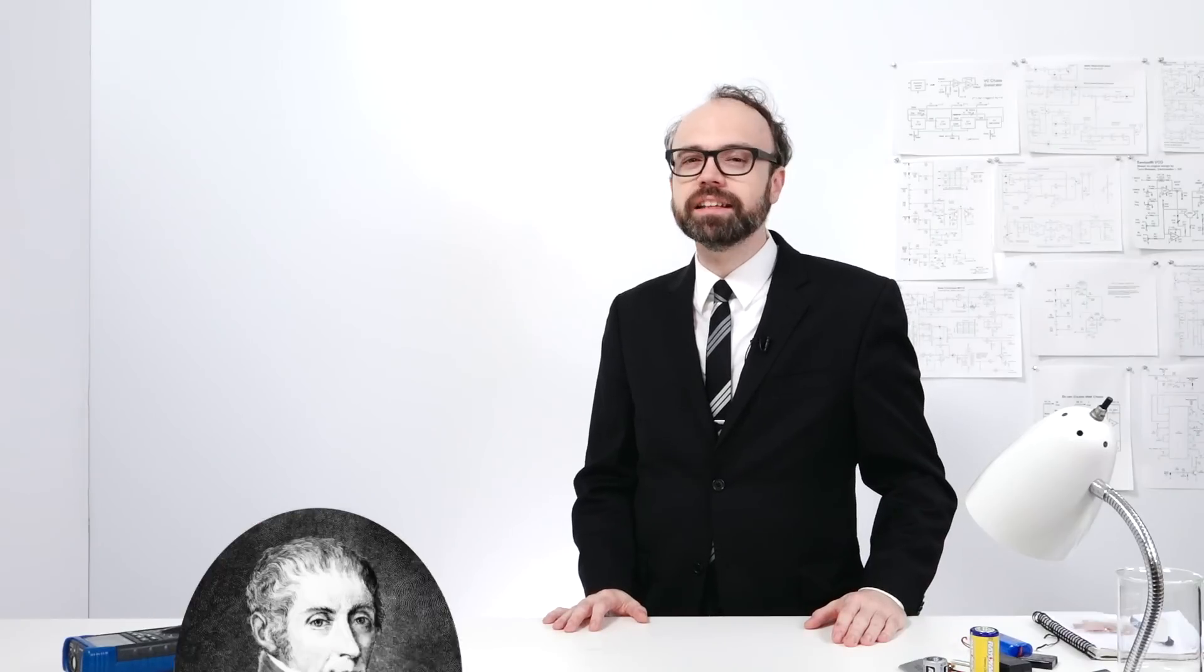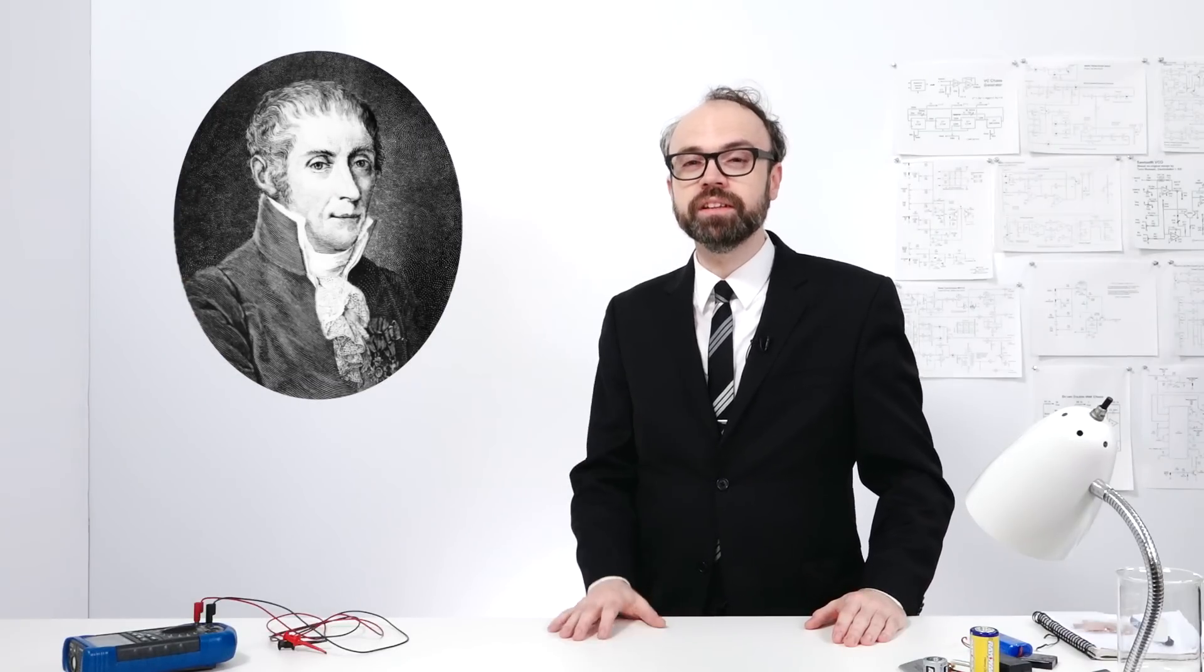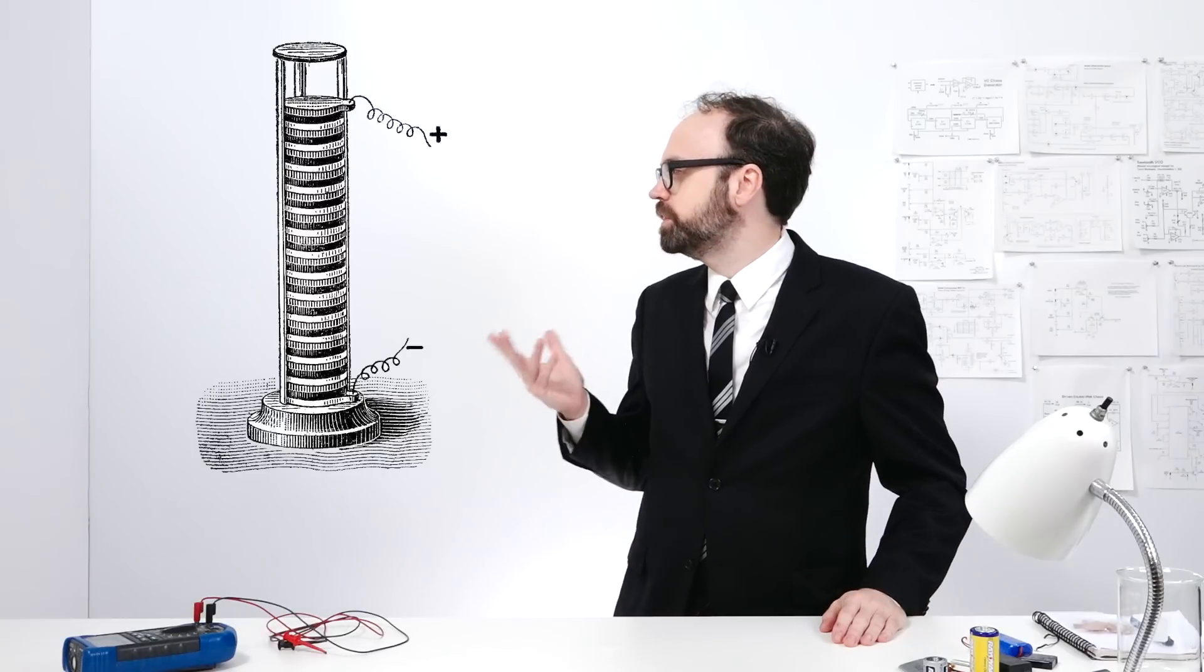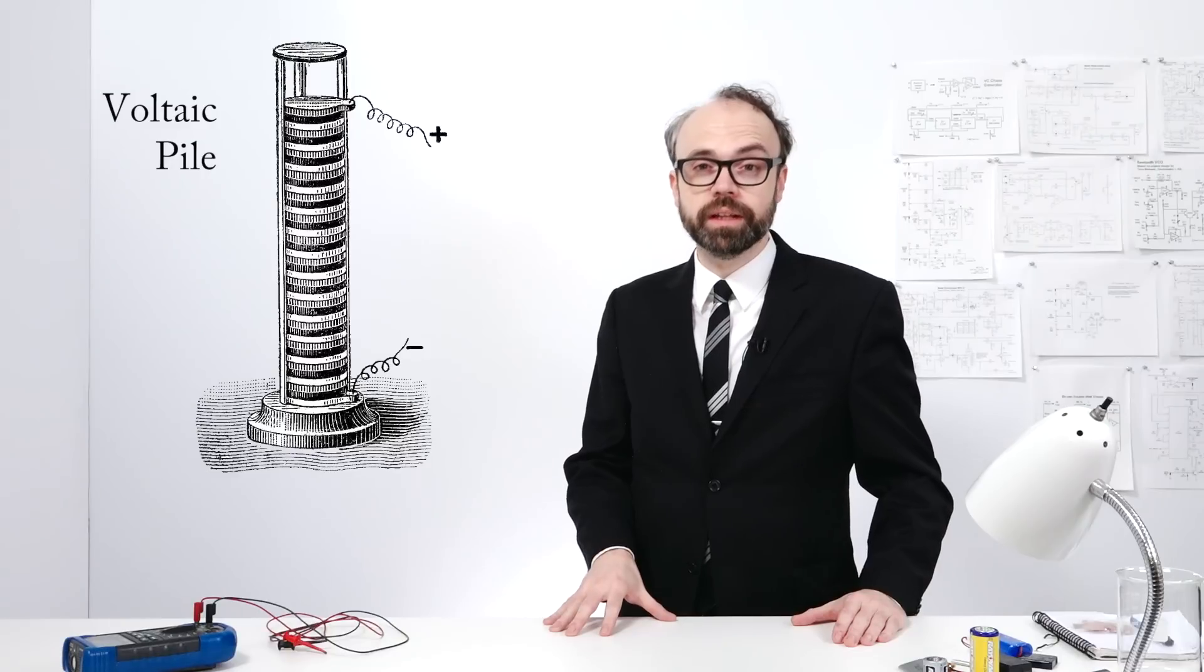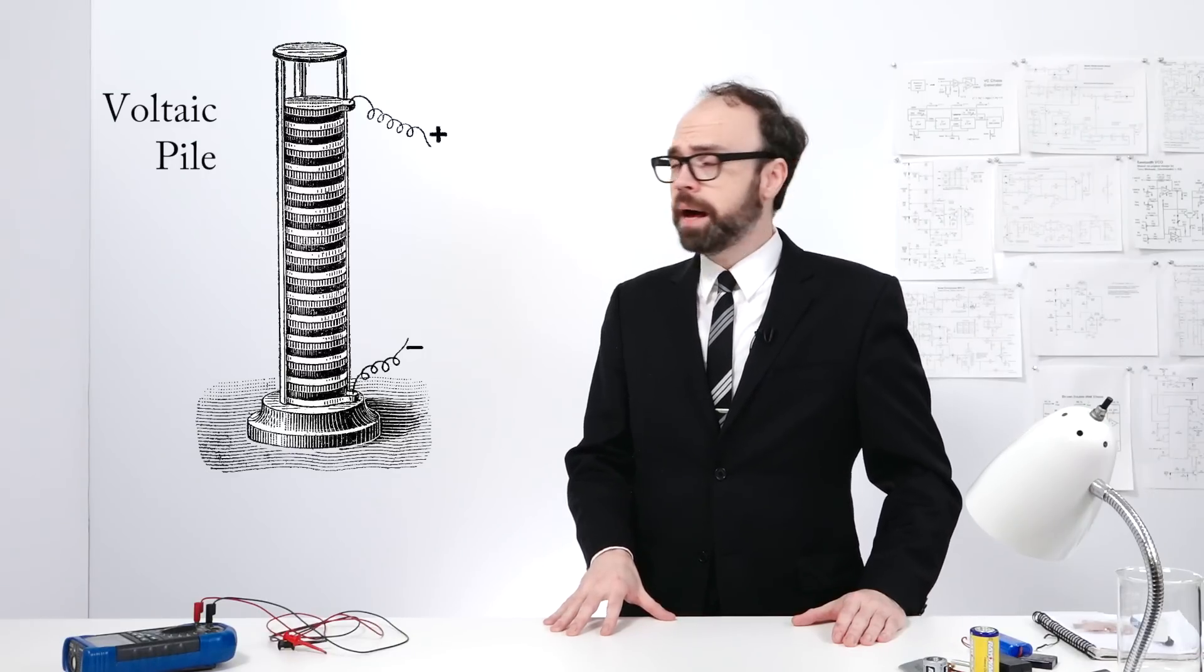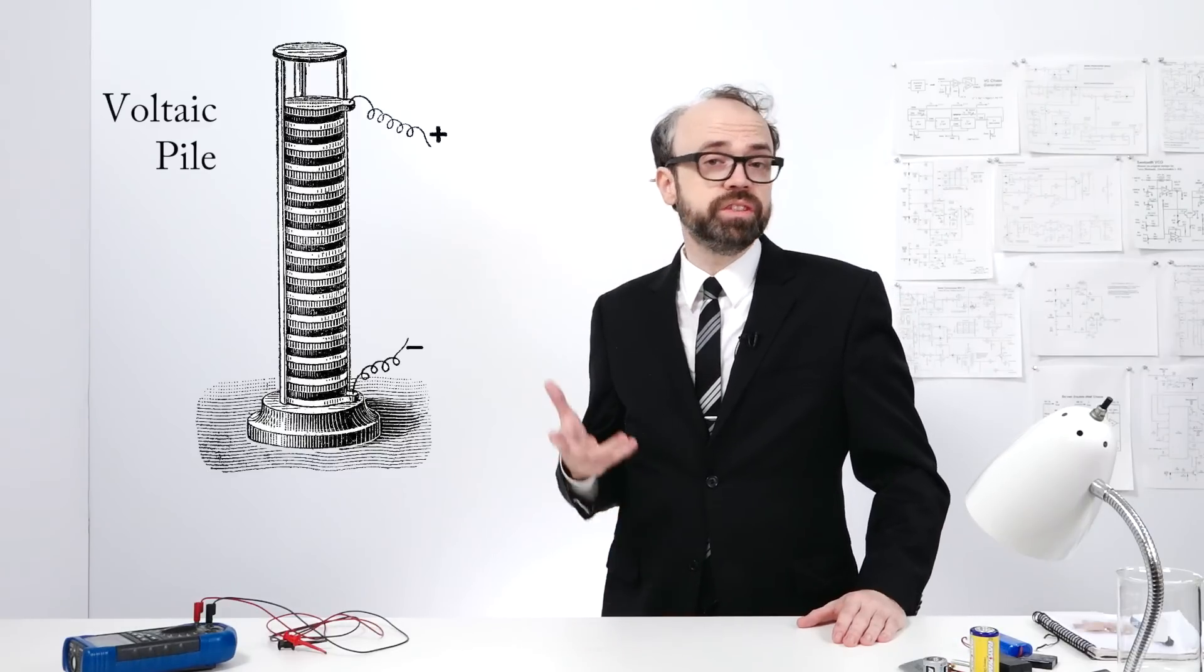In 1800, Alessandro Volta stacked copper and zinc discs on top of one another, separated by pieces of cloth soaked in salt water. He called this a voltaic pile, and it was the first source of relatively reliable continuous electricity in convenient pile form. And this is considered the first definitive battery.